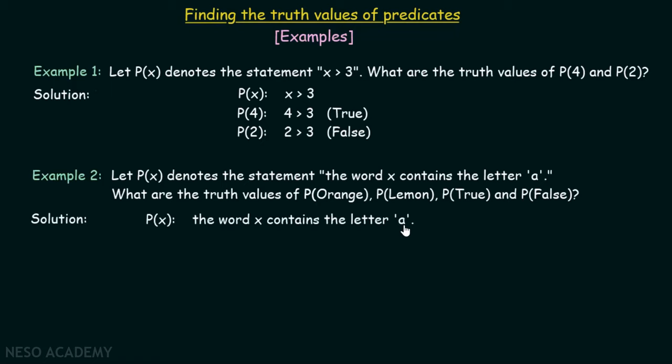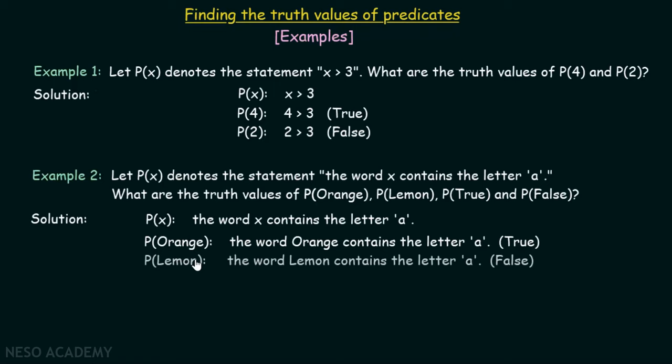Here comes the solution. P(x) denotes the word x contains the letter a. We need to identify what is P(orange). After replacing this x by orange, we got this sentence: the word orange contains the letter a. And this is true. This word orange contains letter a, so this is true.